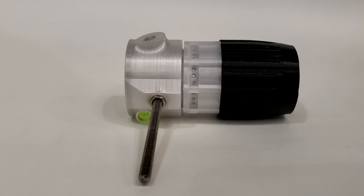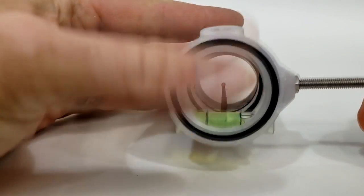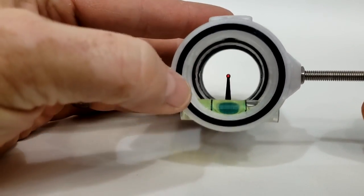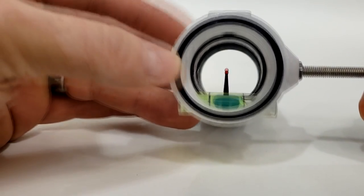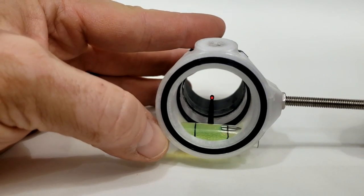Now I designed this scope for someone who maybe doesn't have the best eyes. When I did design it, I made sure I had a large aiming face with multiple rings for alignment inside and it also has a large 40 millimeter level bubble.